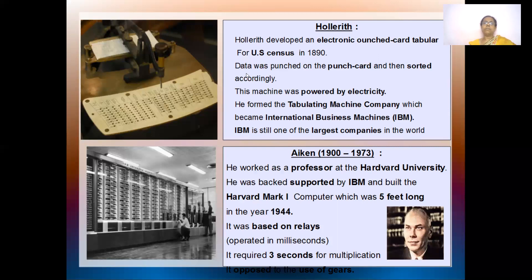The data was punched on the punch card and they were sorted accordingly — that is, how many males or how many females, because it's census, and how many children — sorted accordingly. This machine was powered by electricity, and he formed the tabulating machine. This company later came under IBM.